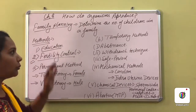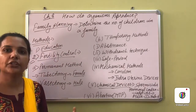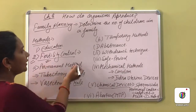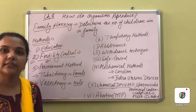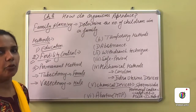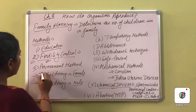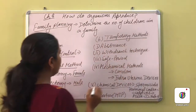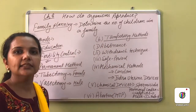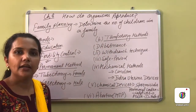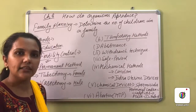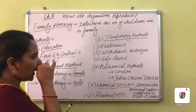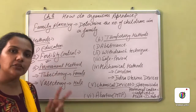The second method is fertility control. There are some permanent methods and some temporary methods. Permanent methods prevent fertilization permanently so there is no possibility of pregnancy in the future. There are two types of permanent methods — one for males and one for females.